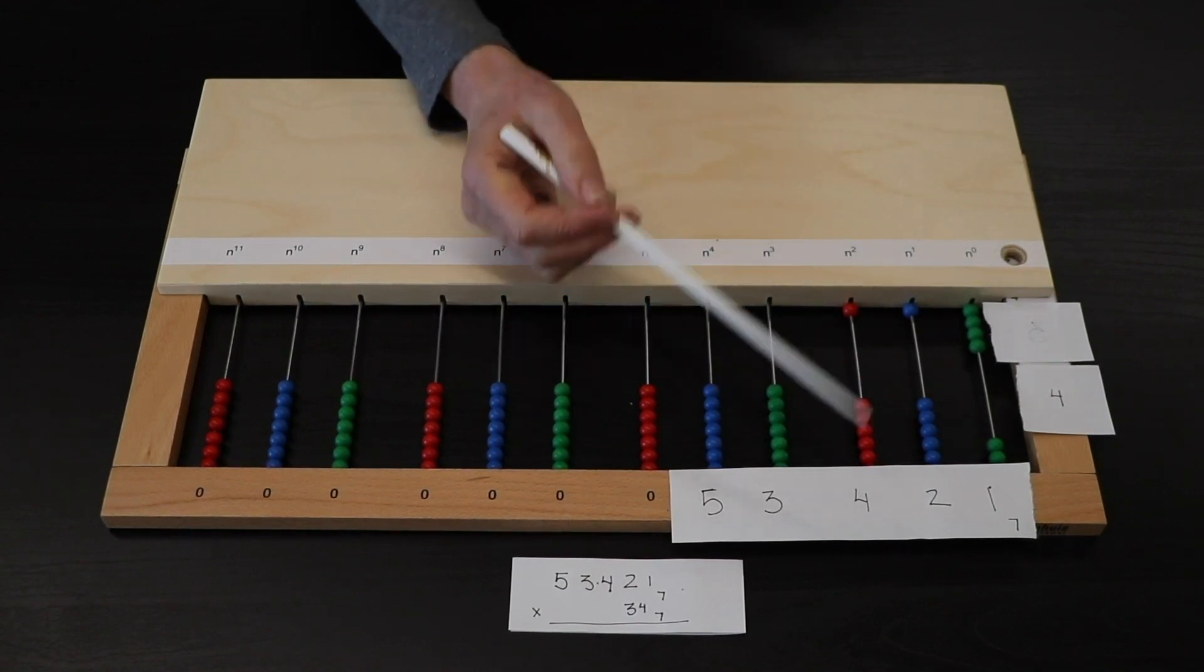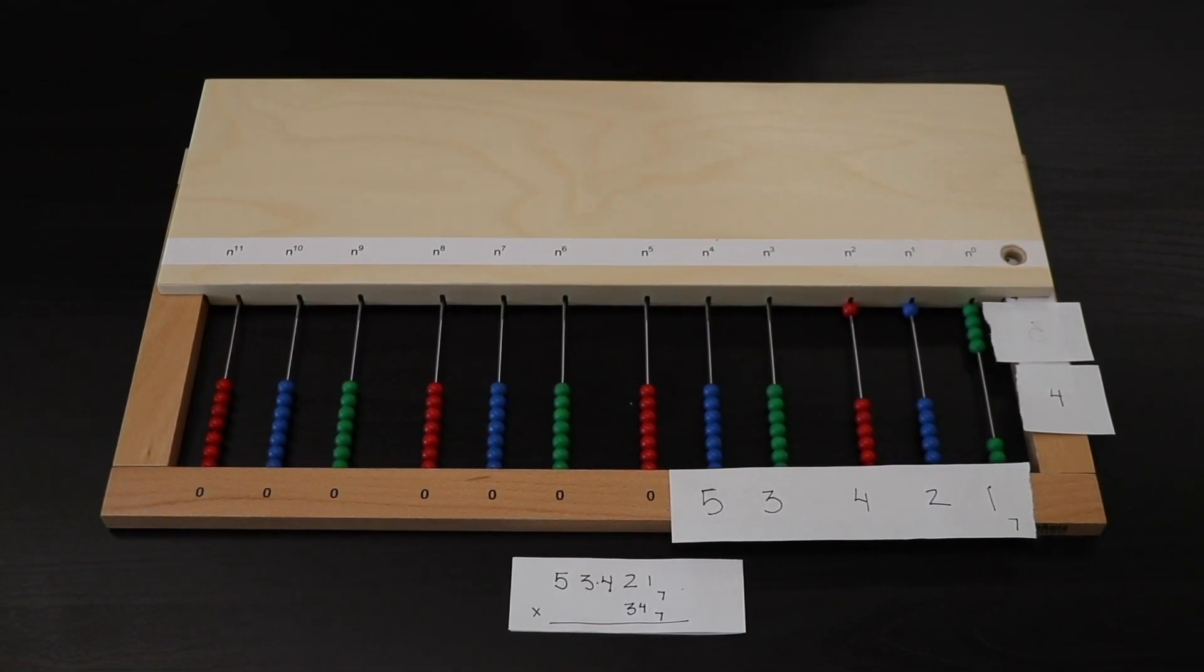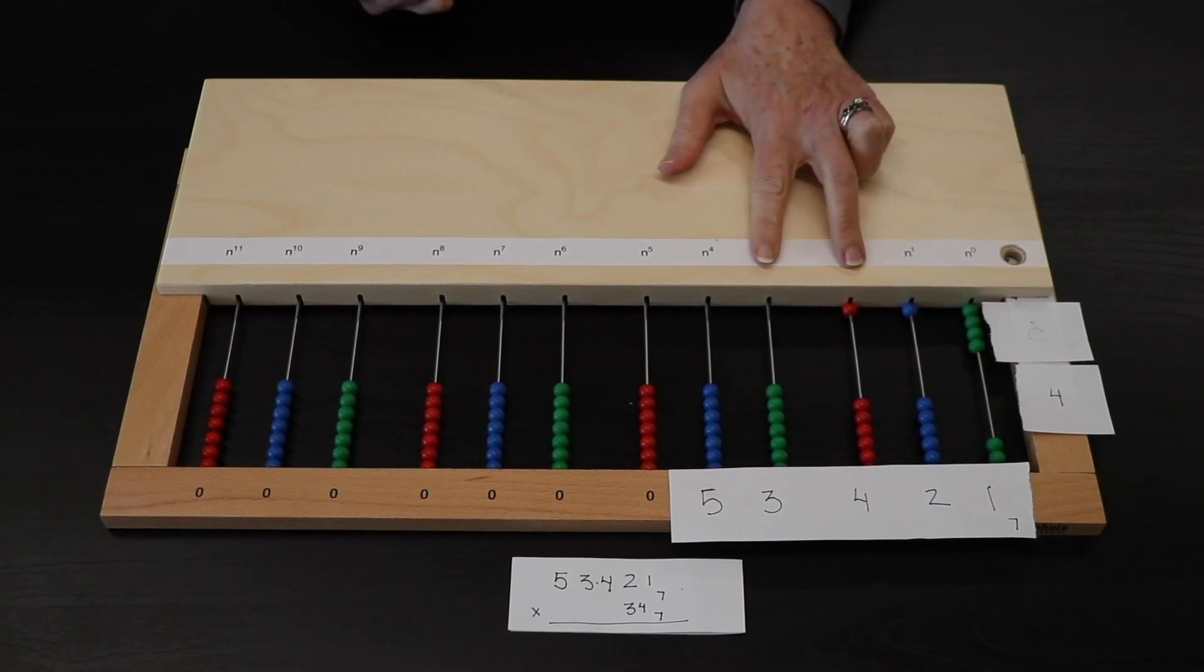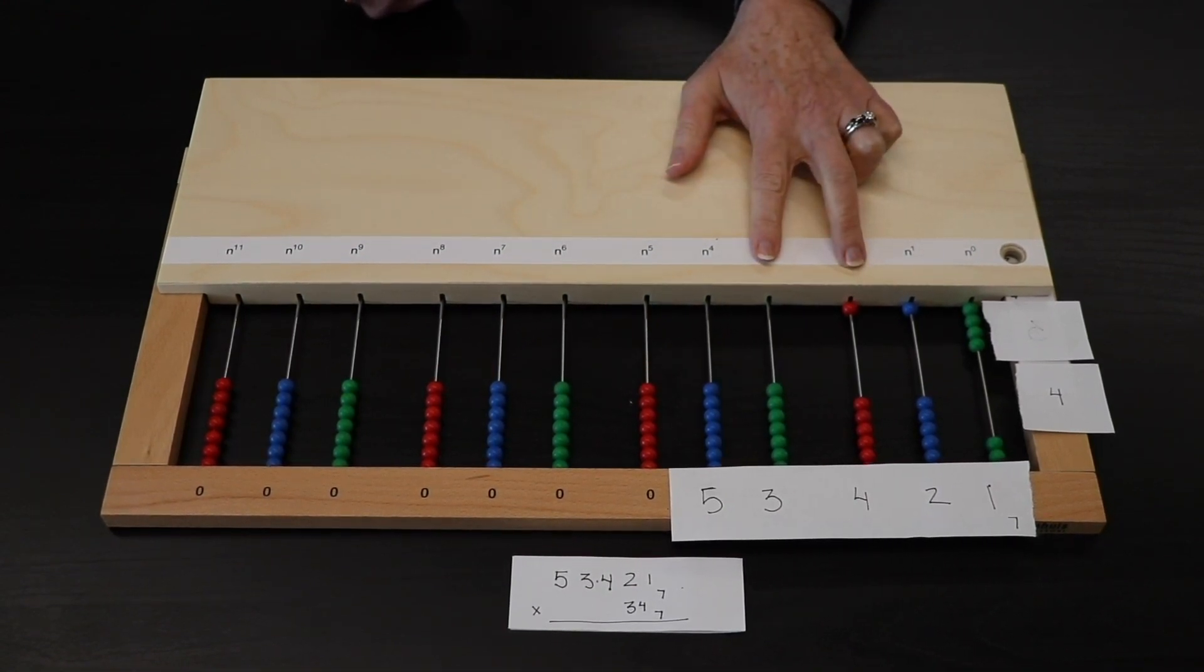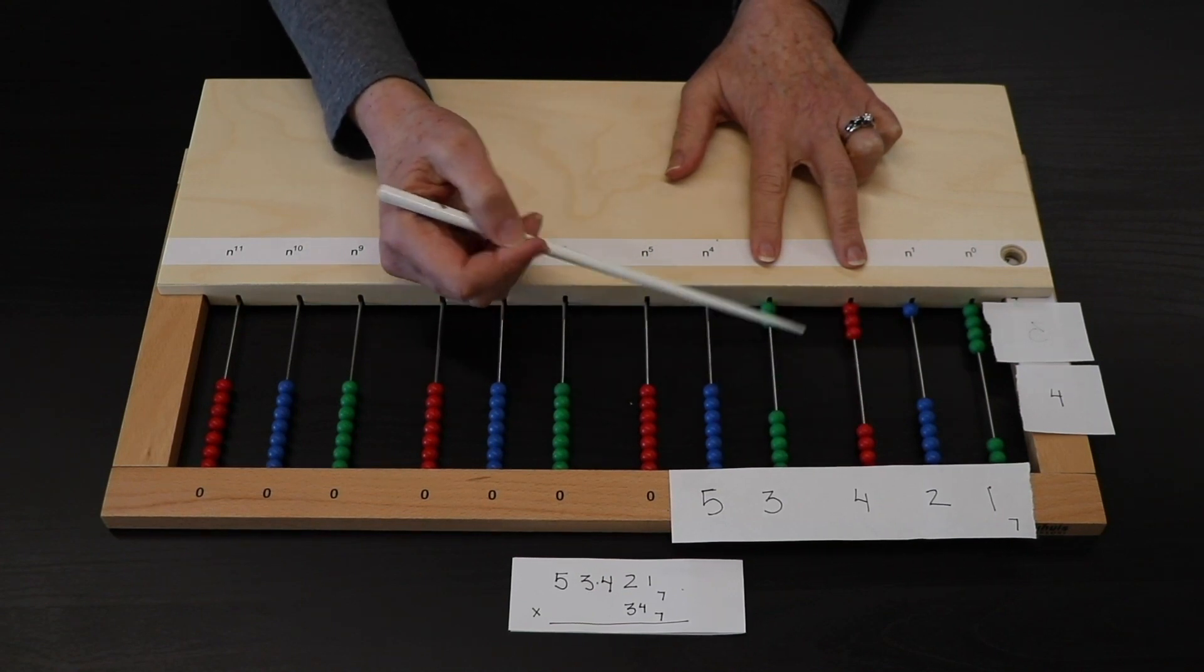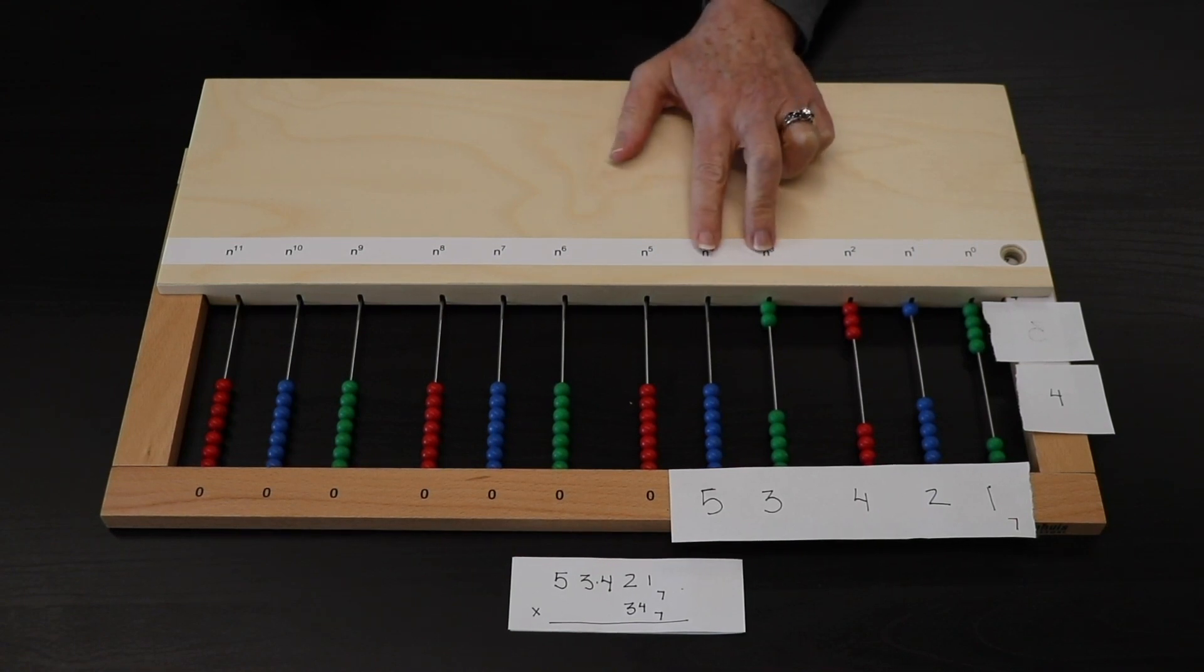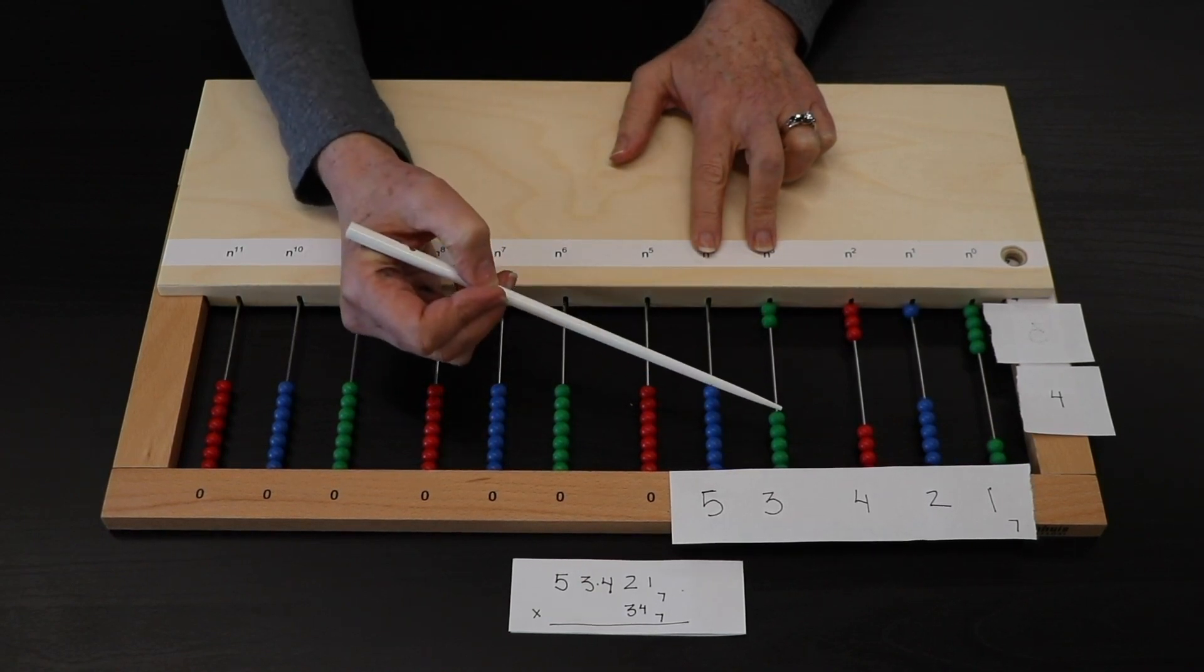4 times 4 is 16. 16 in base 7 is 2, 2. 3 times 4 is 12. 12 in base 7 is 1, 5.